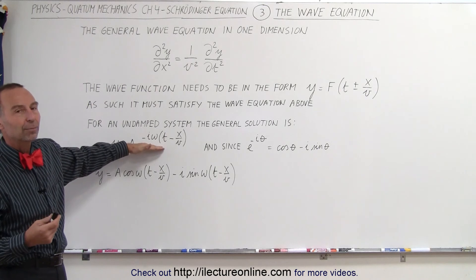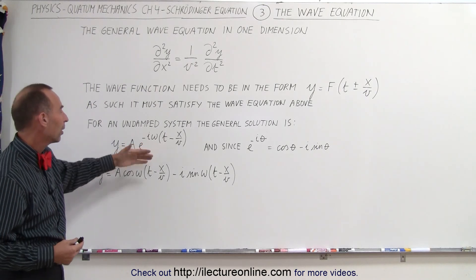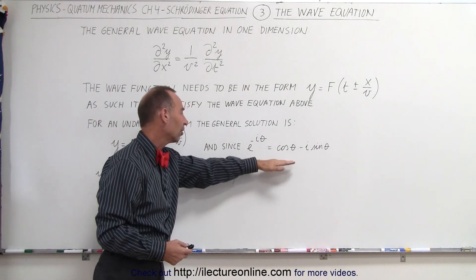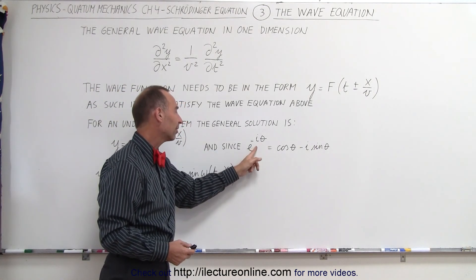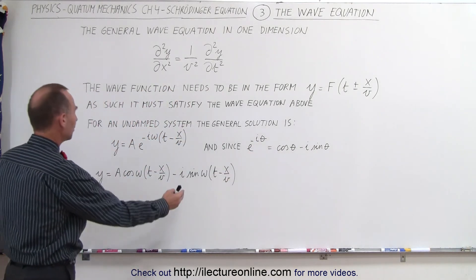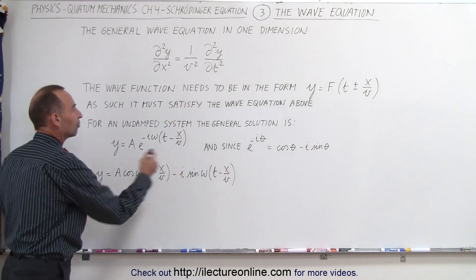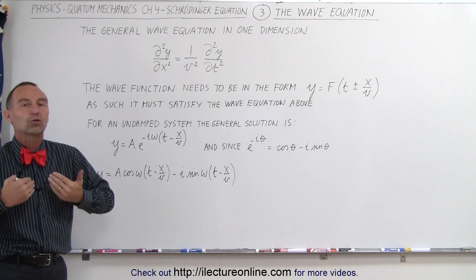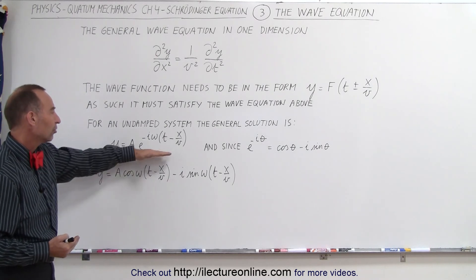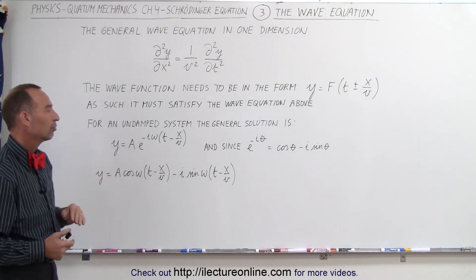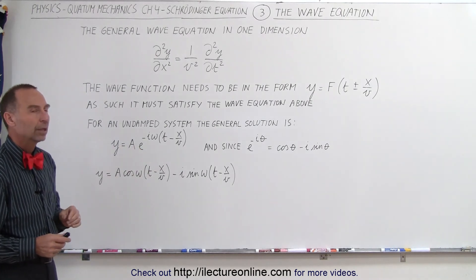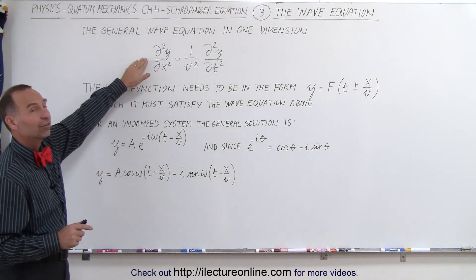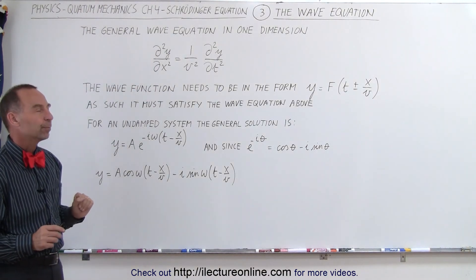This has an imaginary part and a real part. When we write this in the form of sines and cosines, knowing that this is equal to that, this would be the generalized form of the wave equation we're looking for to build up the Schrödinger equation. It must start in this format, and at the same time it must satisfy this equation right here.